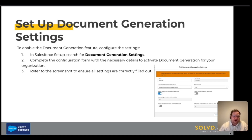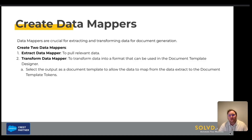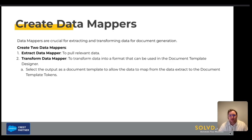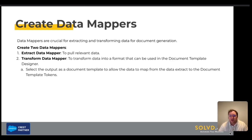Next, we will need to create data mappers. Data mappers are crucial for extracting and transforming data for document generation. We'll need to create two data mappers: an extract data mapper to pull the relevant data, and a transform data mapper to transform data into a format that can be used in our document template designer. When creating the transform, we will want to select the output as 'Document Template' — this will allow us to map the data from the extract to the document template tokens.